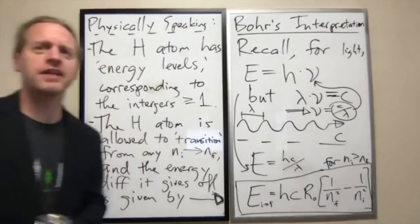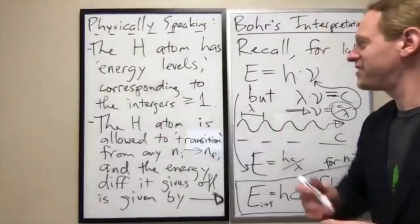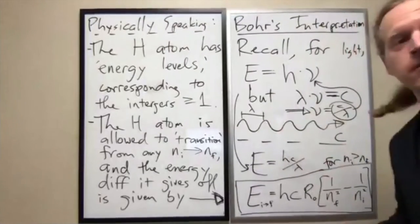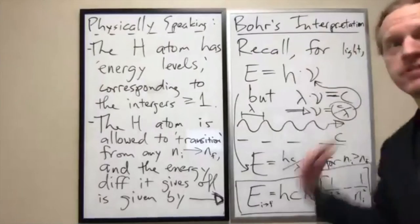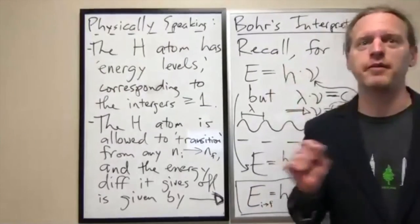That itself is the groundbreaking revolution. That it is only allowed to have certain energies, and by transitioning those energies, it can give off discrete, predictable amounts of energy.